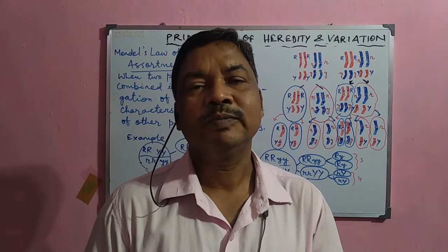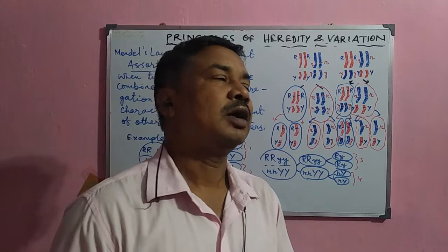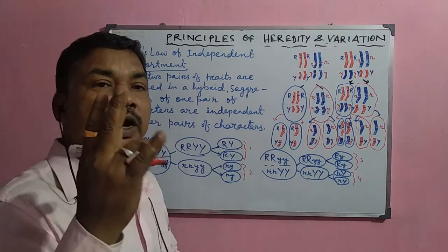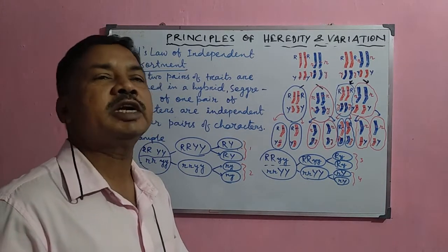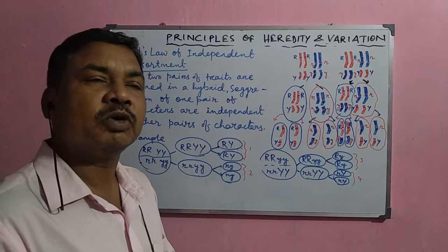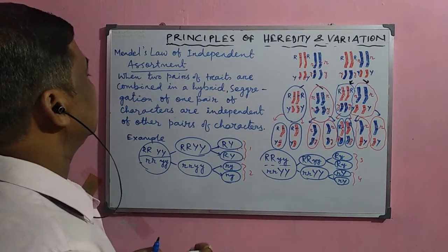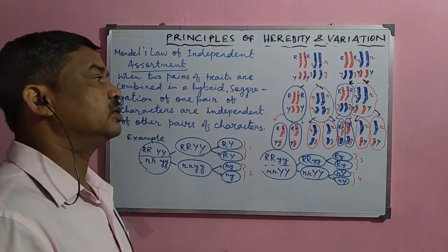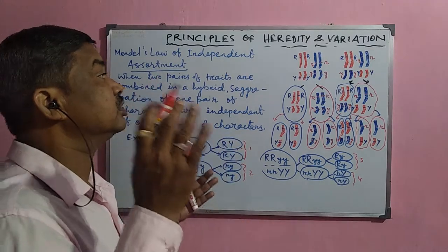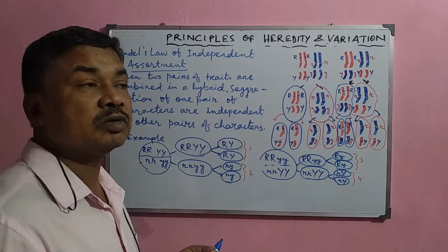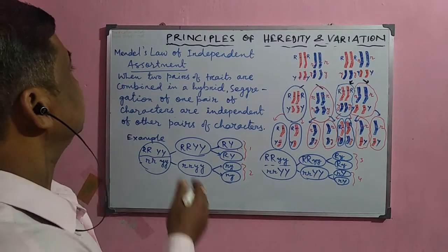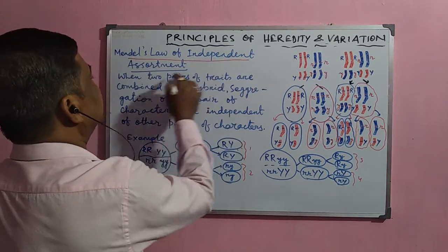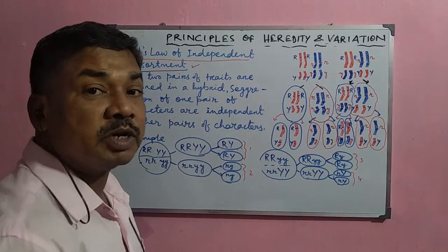Good morning, students. In my previous video, I discussed Mendel's di-hybrid cross experiment, where the pattern of inheritance of two pairs of contrasting characters simultaneously was observed in a very precise manner, and how different characters transmitted from one generation to the next, and how 16 combinations were observed, and the 9:3:3:1 ratio was observed. But in this video, I shall discuss Mendel's law of independent assortment from the di-hybrid cross experiment.